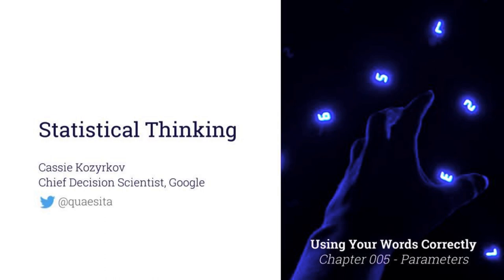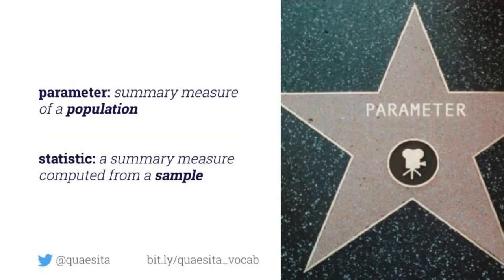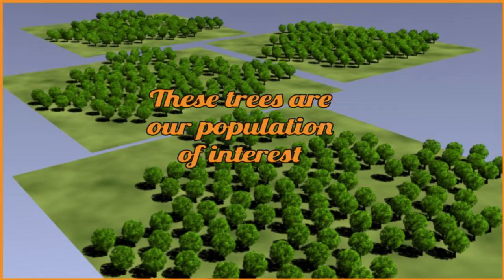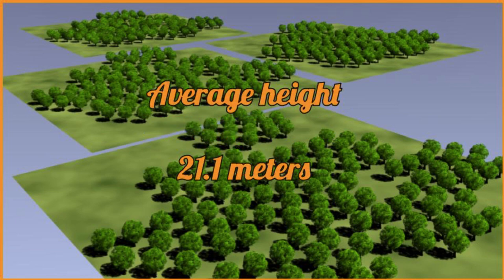Enter the star of our show: the parameter. In statistics, the parameter refers to a summary measure of a population. Now you are deeply excited by that population — by those trees — and I'm going to summarize for you everything you care about. The true average height of all the trees, the parameter, is 21.1 meters.